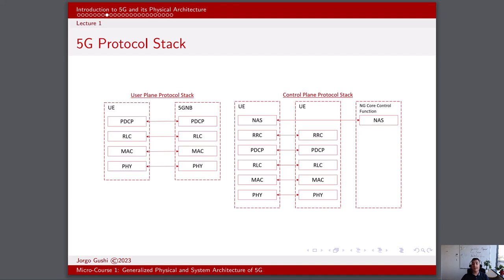In the control plane, the application layer handles signaling protocols for network management, such as signaling for mobility management, session establishment, and authentication. The session management layer, or layer 6, handles the setup, maintenance, and termination of user sessions, and is responsible for managing user context and session information. The access and mobility management function, or AMF, which is layer 5, handles access control and mobility management. It authenticates and authorizes the user equipment's access to the network and manages handover procedures during mobility events.